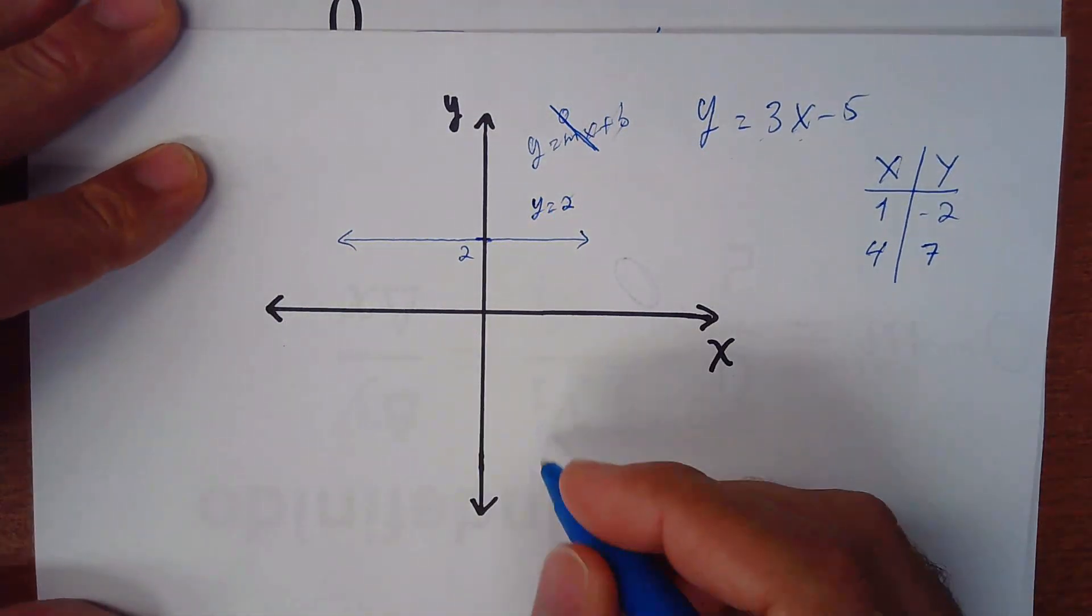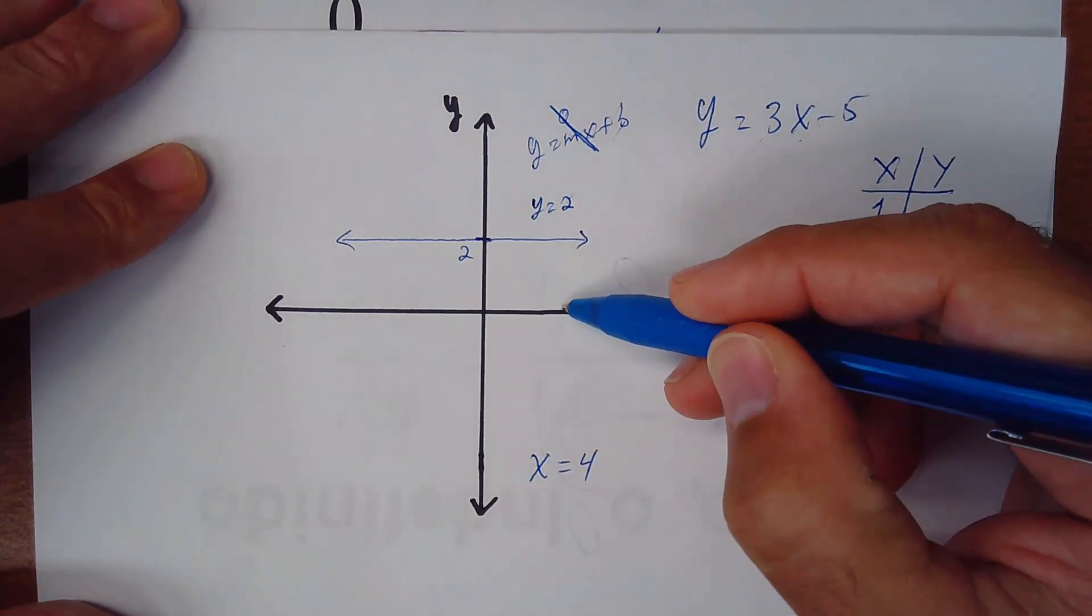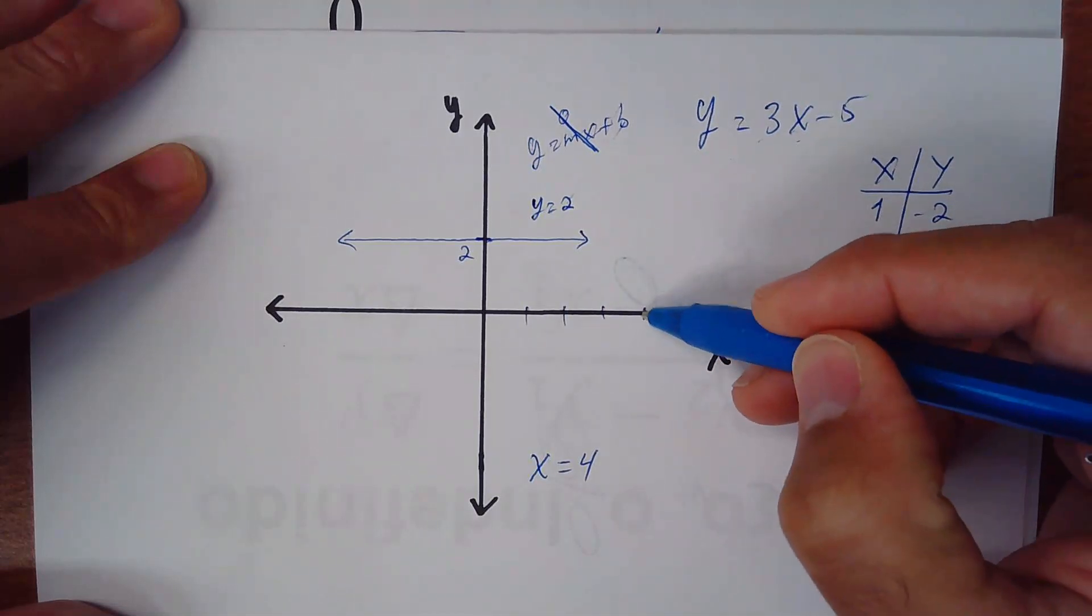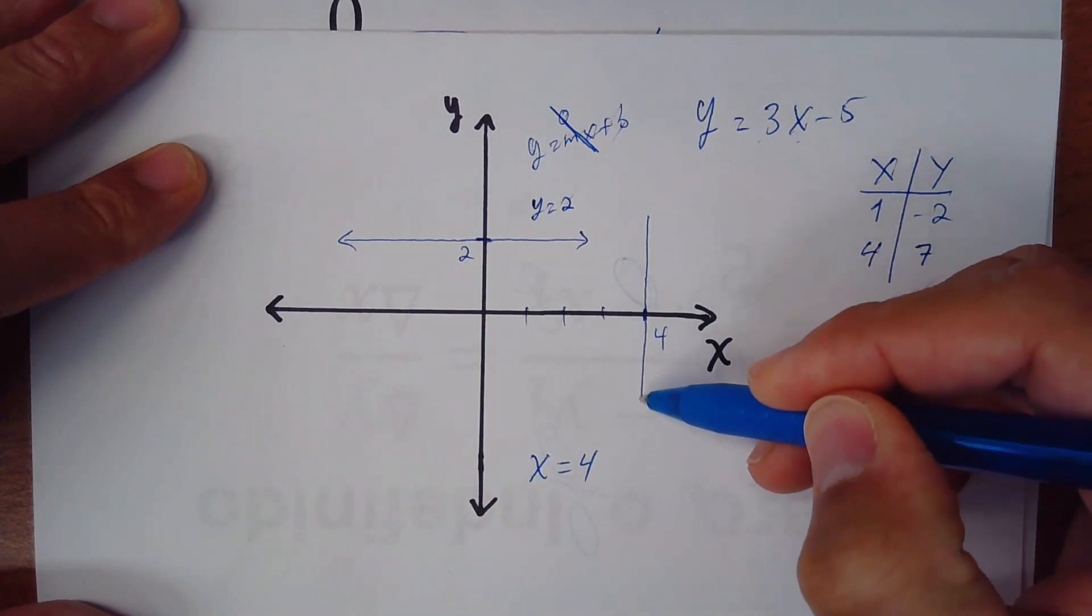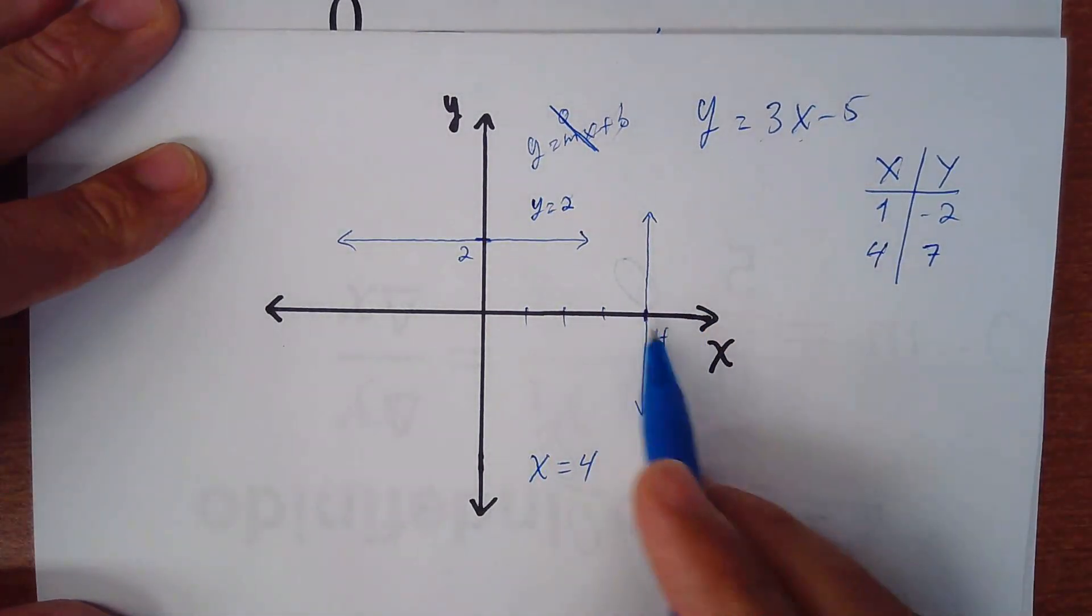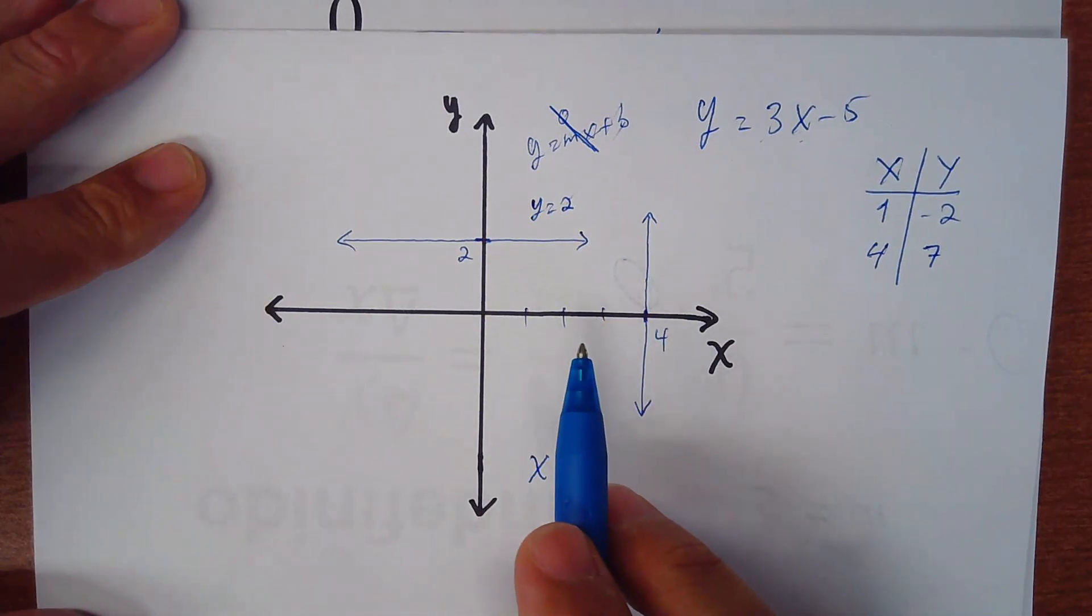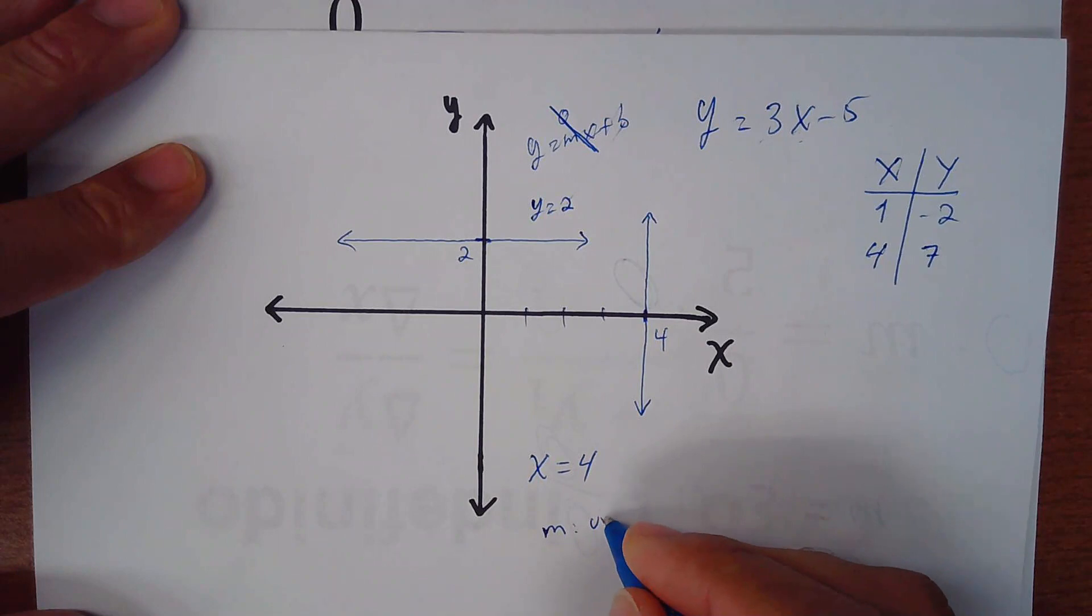Now if we have x equal 4, I go 1, 2, 3, 4. Here, in number 4, I make a line which is a vertical line, x equal 4. In this case, the slope is undefined.